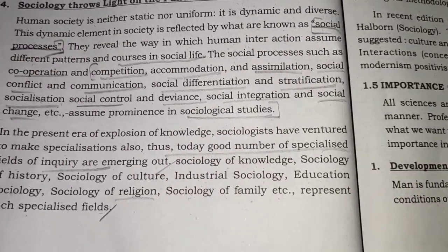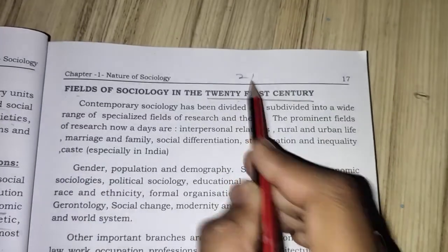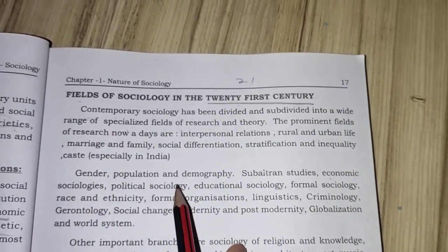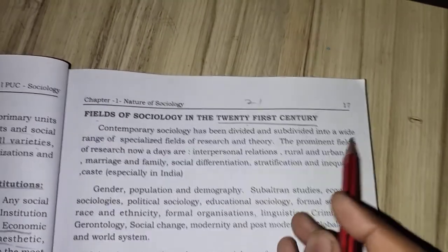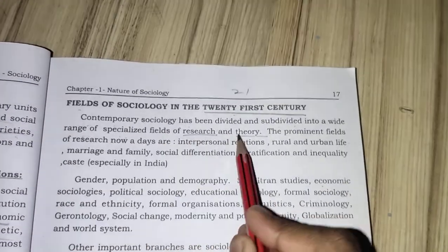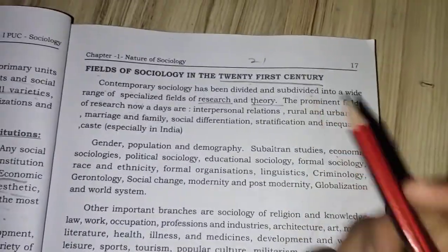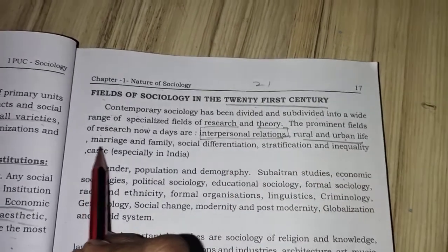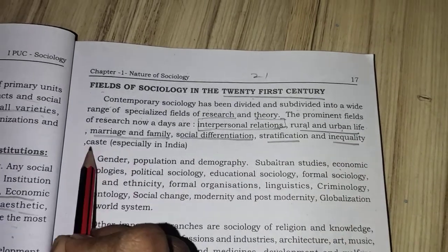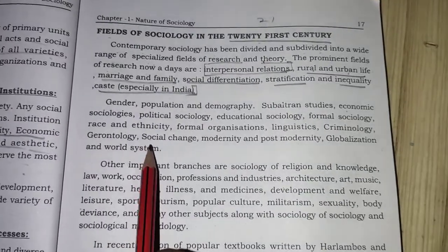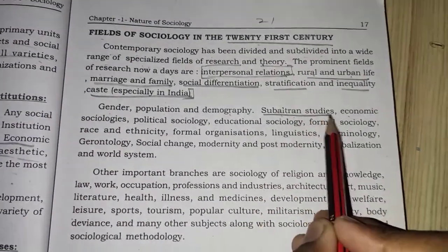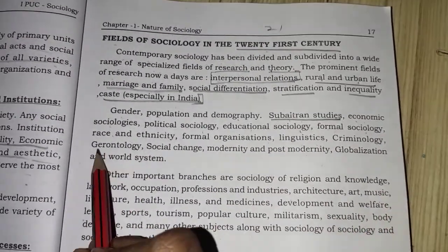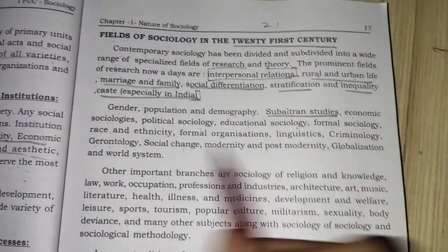Regarding fields of sociology in the 21st century, contemporary sociology has been divided and subdivided into a range of specialized fields of research and theory. Prominent research fields include interpersonal relations, rural and urban life, marriage, family, social differentiation, stratification, inequality, caste — especially dominant in India — gender, population, demography, subaltern studies, economic sociology, political sociology, educational sociology, formal sociology, race, ethnicity, formal organization, linguistics, criminology, social change, modernity, post-modernity, globalization, and world systems.